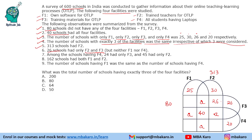That number 26 is now filled in. Amongst the schools having F4, 24 had only F3 and F4, and 45 had only F2 and F4. So only F3∩F4 is 24, and only F2∩F4 is 45. These values are now placed in the diagram.